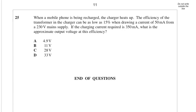A mobile phone is being recharged. The charger heats up. The efficiency of the transformer can be as low as 15% when drawing a current of 50 milliamps from the 230 volt mains supply. The charging current required is 350 milliamps. What is the approximate output voltage at this efficiency?